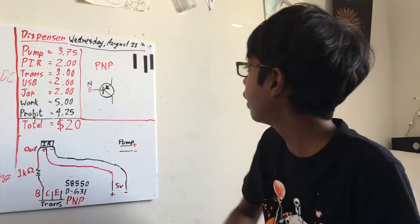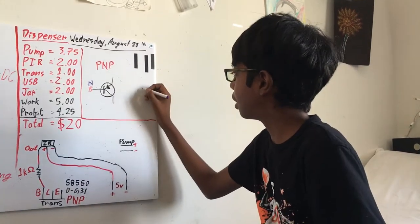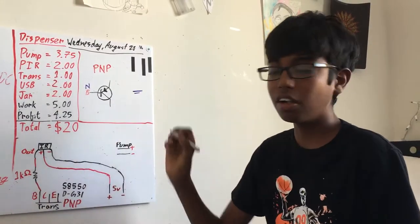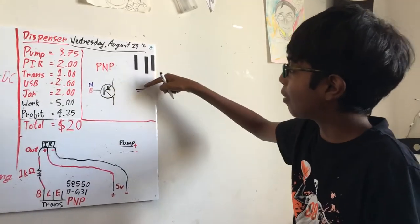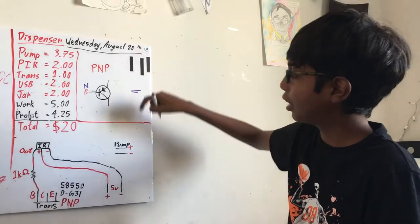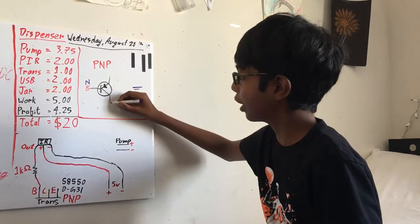For example, here we have a battery. The emitter is always connected to the positive side of the battery, and the collector is always towards the negative.